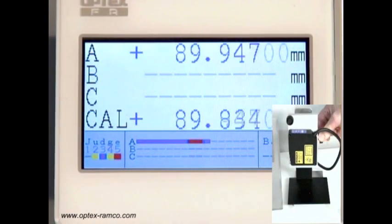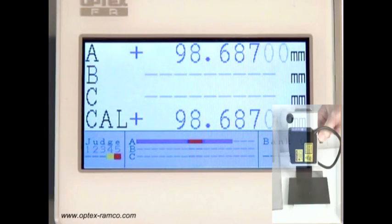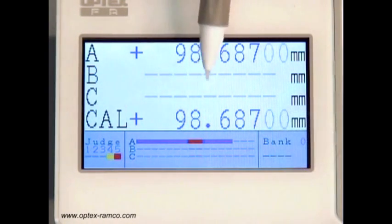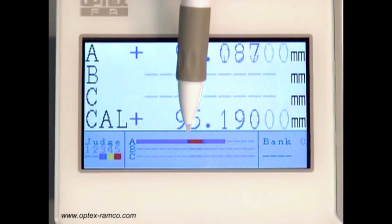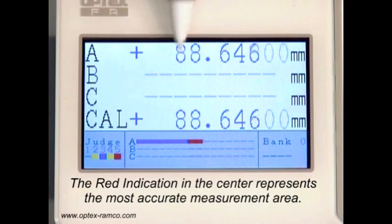Notice the red band in the center of the bar graph display. This shows the center 10% of the sensing area. This is where the sensor is most accurate.